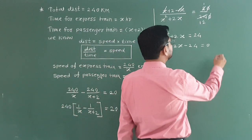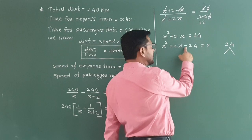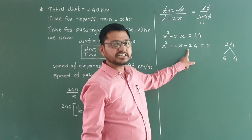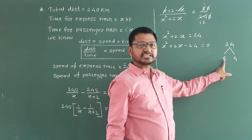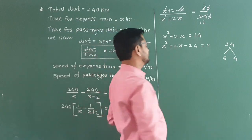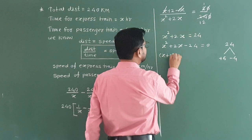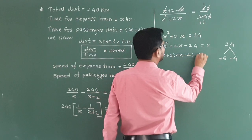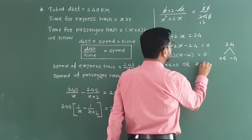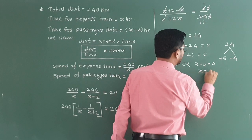We have to find two numbers whose multiplication is 24 and subtraction is 2. Those numbers are 6 and 4. Since the product is negative, one number is positive and one is negative. The middle term is positive so plus 6 and minus 4. We can write: (x plus 6)(x minus 4) equals 0. Therefore x equals minus 6 or x equals plus 4.